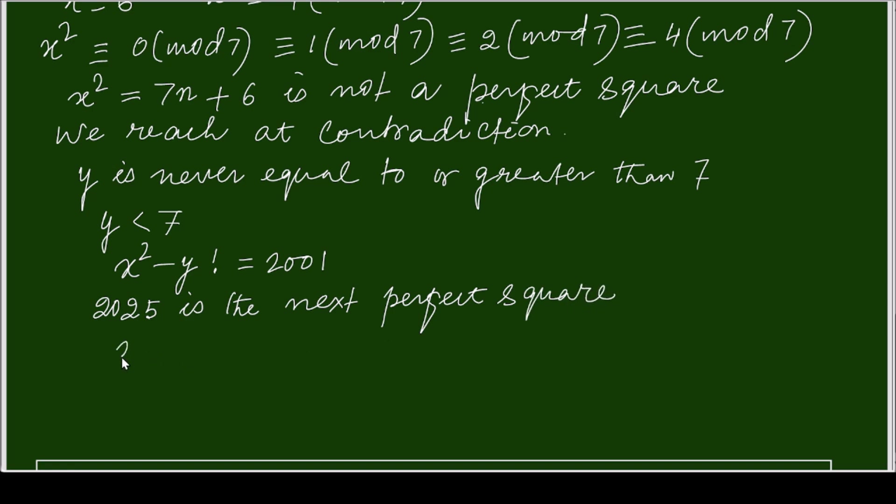So x square minus y factorial, x square equals to your 2, 0, 2, 5. So 2, 0, 2, 5 equals to your 2, 0, 0, 1 plus y factorial. That will be your 24.